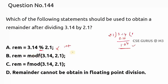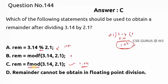The correct function is fmod(). Writing fmod(3.14, 2.1) will divide and return the remainder 1.04 successfully. The % operator is only for integers; for floating-point remainder you must use fmod(). So option C is the correct answer.